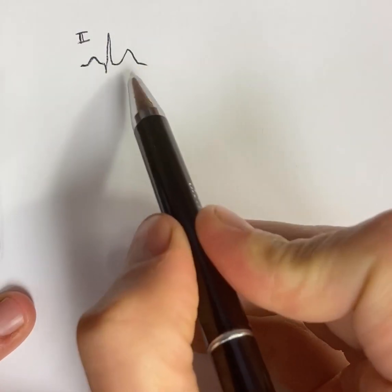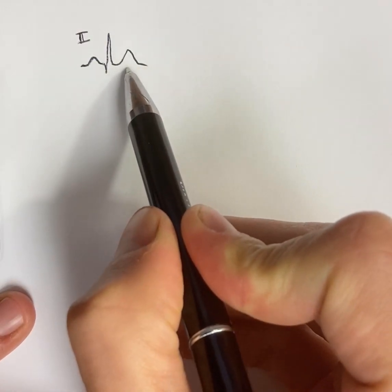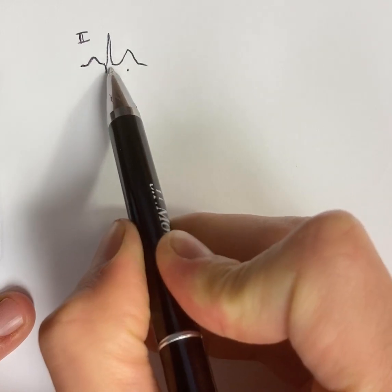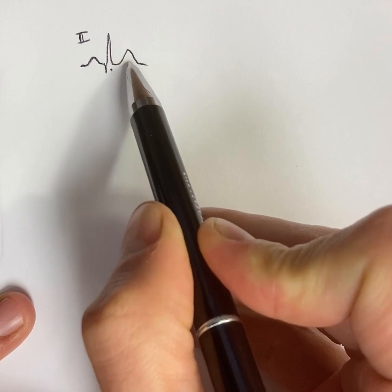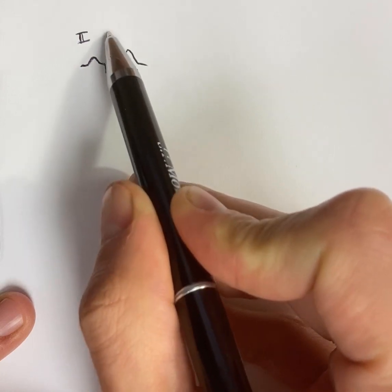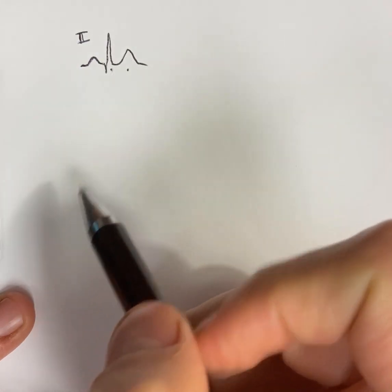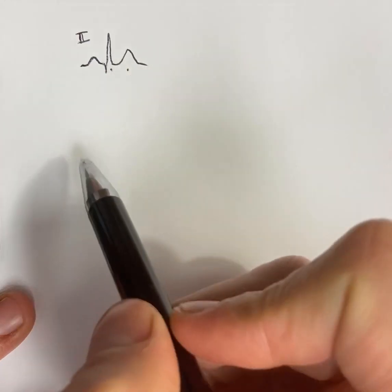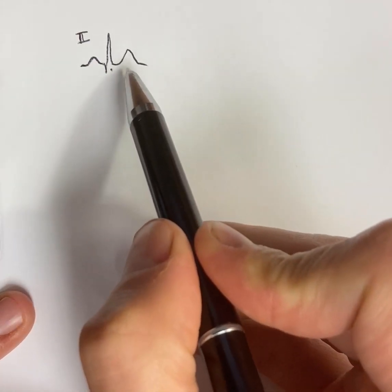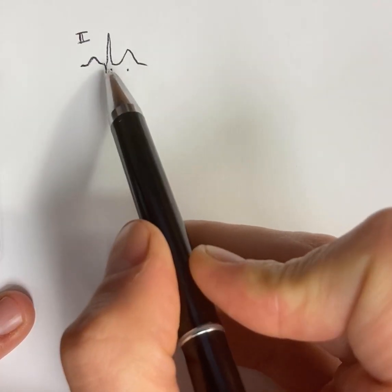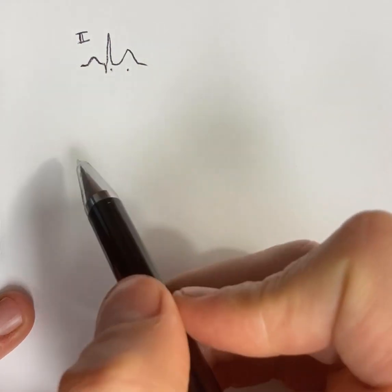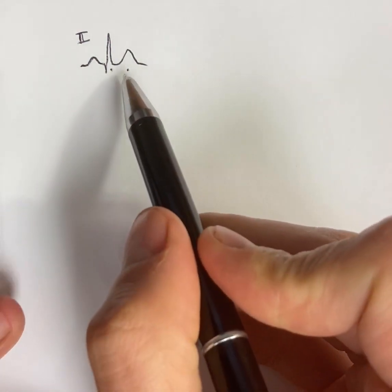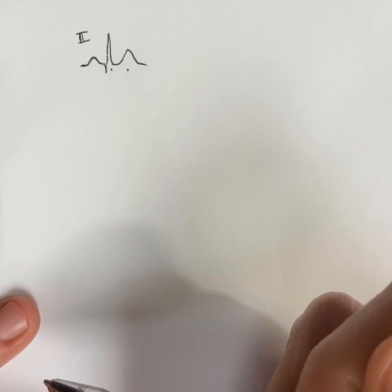Have you ever wondered why ventricular repolarization, an opposite electrical event of depolarization, has the same electrical direction? Understanding why the T-wave generally points in the same direction as the QRS under normal circumstances is both cool and can help you predict some abnormal states.